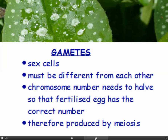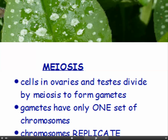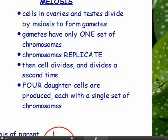What about gametes? It's a bit different — these are the sex cells. They must be different from each other, and that's how we get variation in each generation. The chromosome number needs to halve so that the fertilised egg ends up with the correct number of chromosomes. Gametes are produced by meiosis. Meiosis takes place only in the ovaries and the testes, nowhere else in the body. Cells in the ovaries and testes divide by meiosis to form gametes, so the chromosome number is halved and the gametes have only one set of chromosomes instead of two.